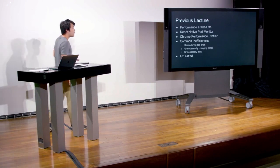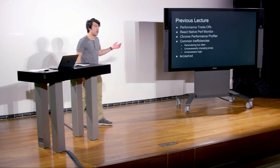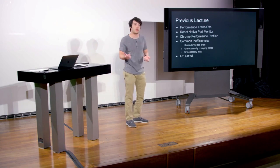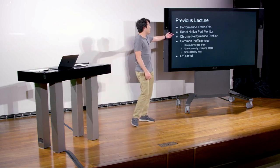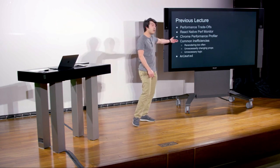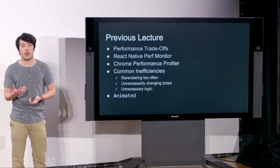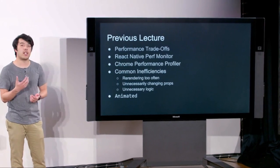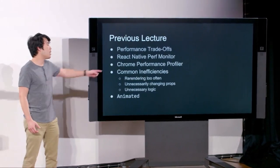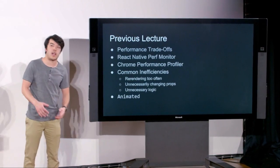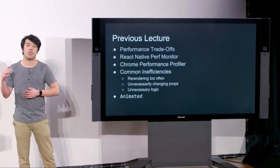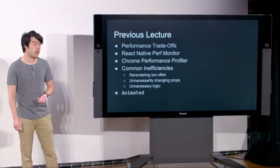Last week, we talked about performance and the trade-offs that come with performance optimization, namely additional complexity. We talked about a couple of different ways to test performance: one being the React Native Perf Monitor, which is built into your phone and allows you to see how many frames per second you run. We also talked about the Chrome Performance Profiler, which runs your JavaScript code within Chrome and shows you a flame chart of all the components that are rendering.